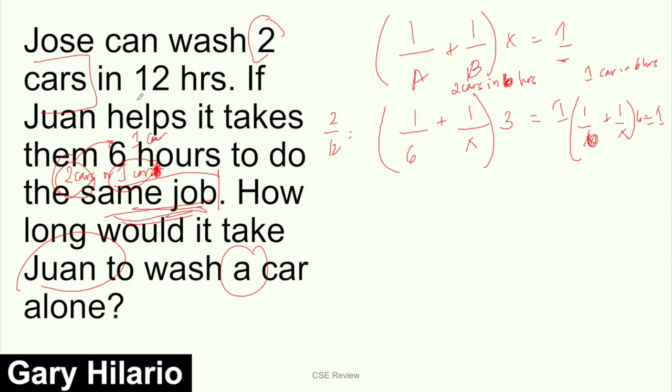This is if 2 cars in 6 hours. But if it's 1 car in 6 hours when they work together, then our formula changes to 1/6 + 1/X times 6 equals 1. Now, just with this problem, I'm leaning towards 2 cars because 'same job' - the same job mentioned is Jose washing 2 cars. So I'm going to solve this side because I prefer it. My understanding is, if we're talking about the same job, and the only job mentioned is washing 2 cars, then we use this formula instead.